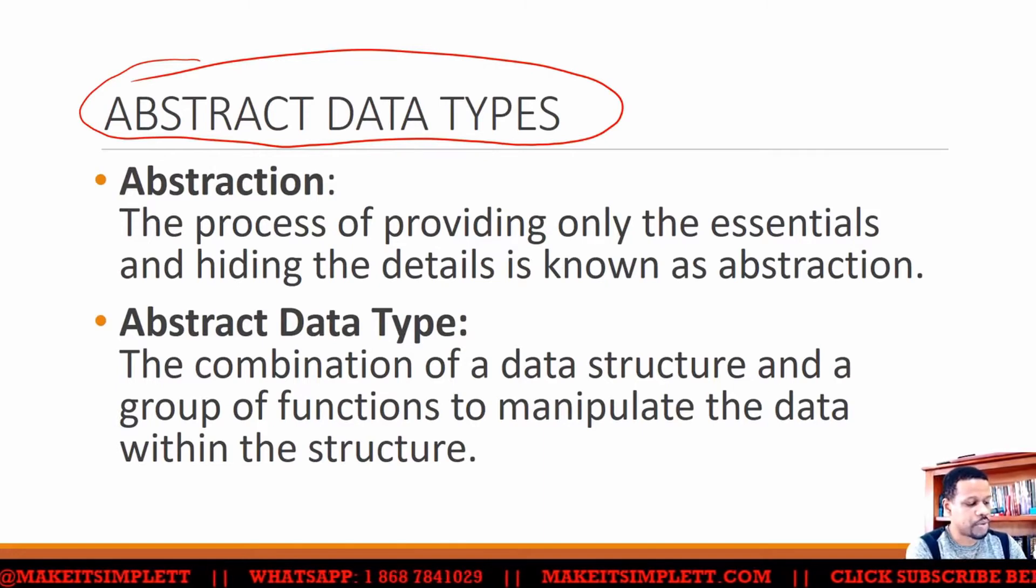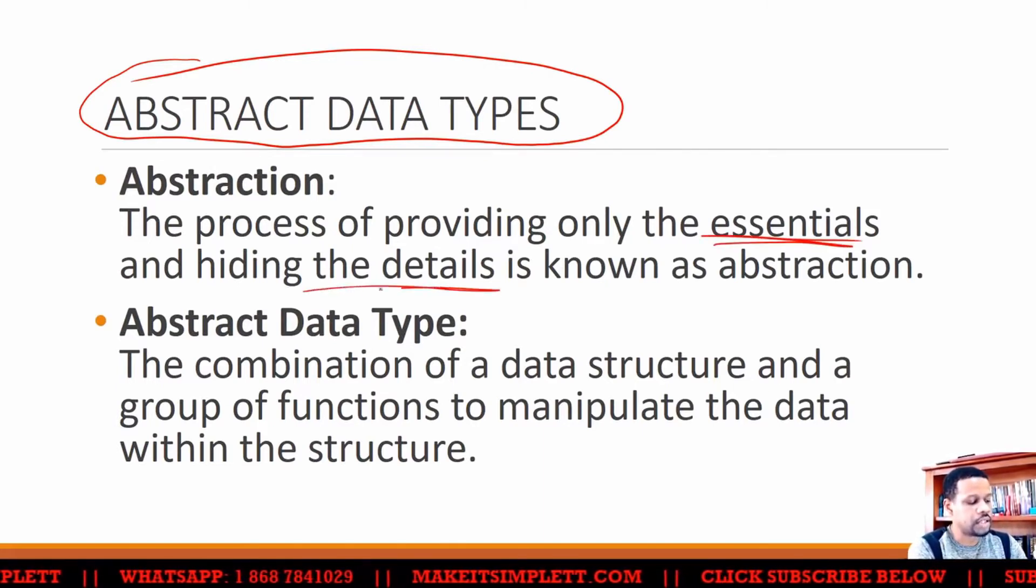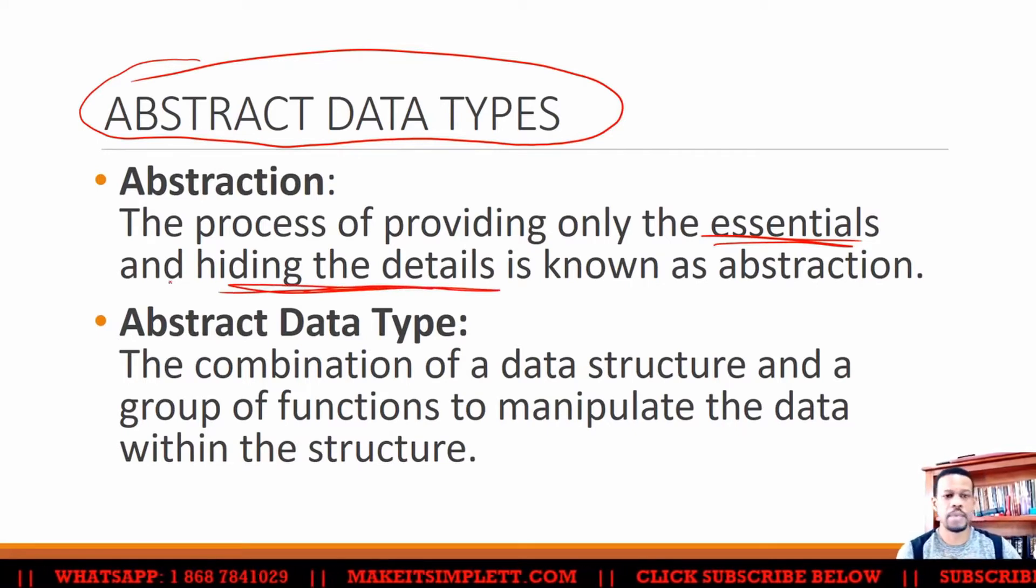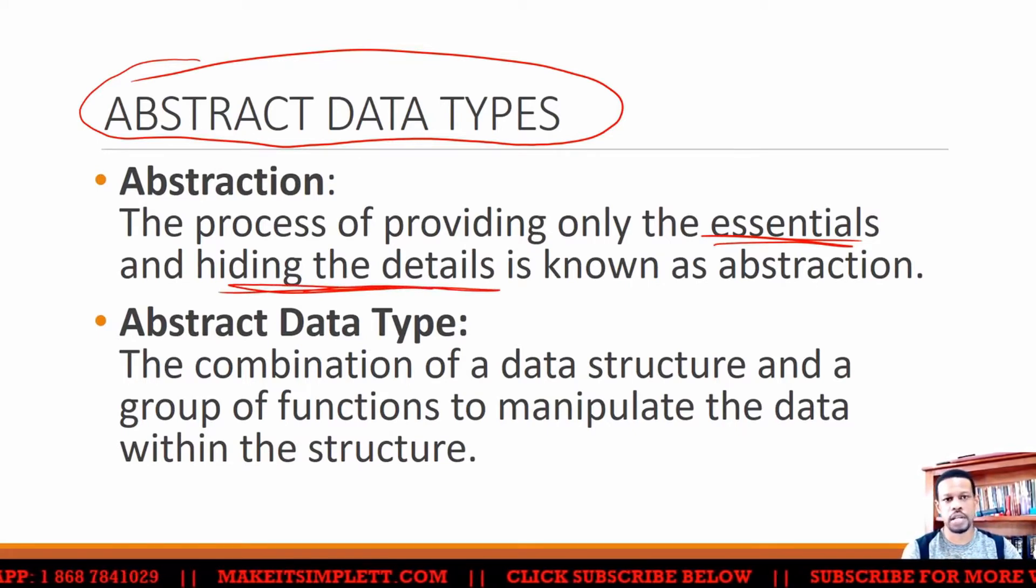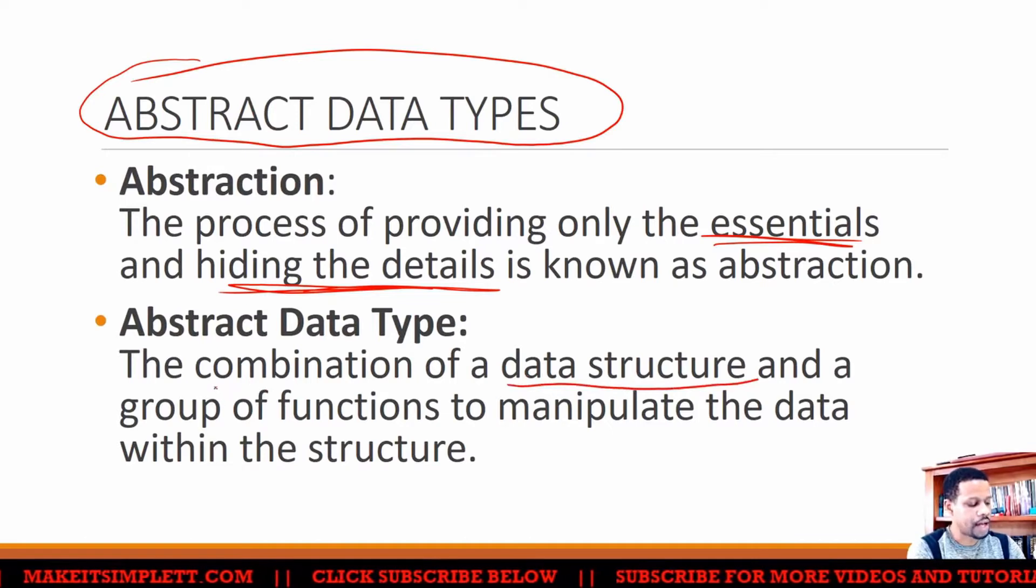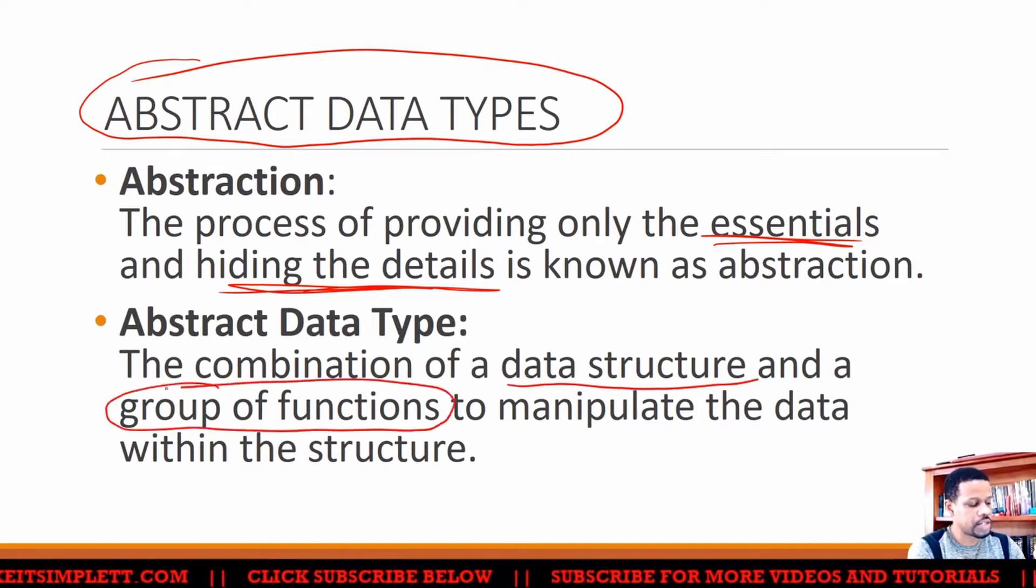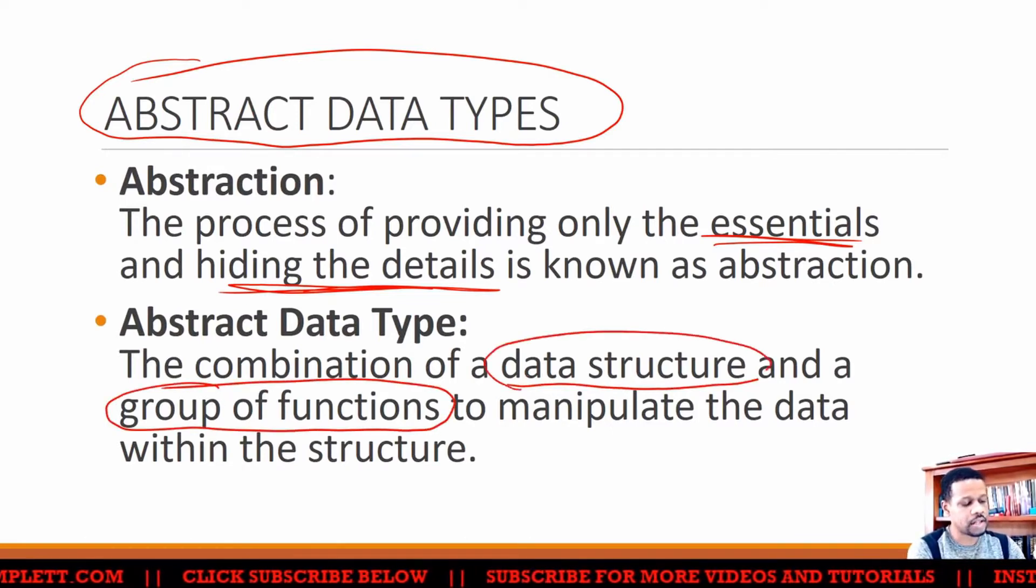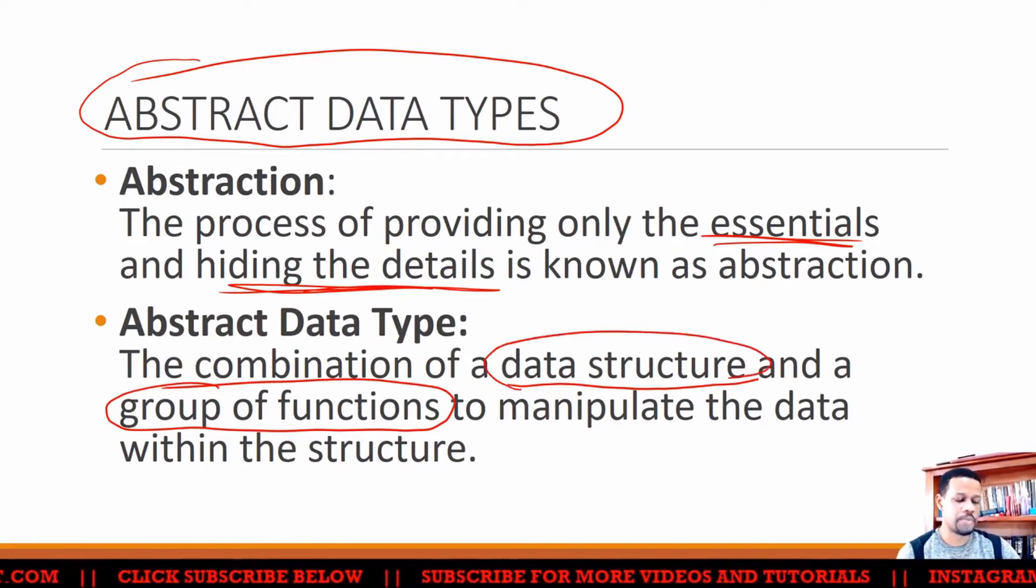Abstraction is the process of providing only the essentials and hiding the details. So when you create an abstract data type, you're creating the ability to do something, but you're not saying how you do it. An abstract data type is a combination of a data structure and a group of functions. So when you create a group of functions to act on a data structure, you're creating an abstract data type.